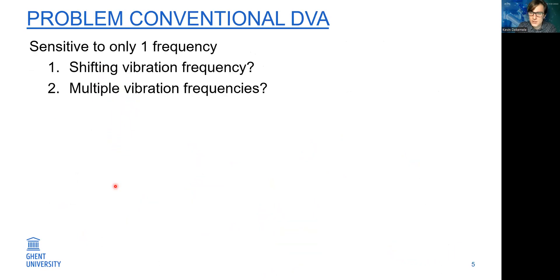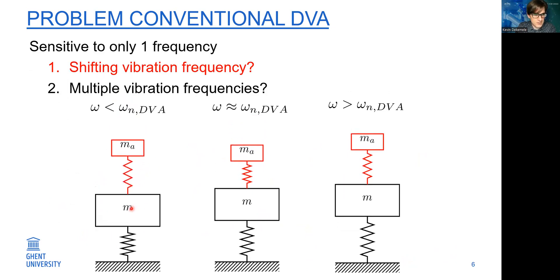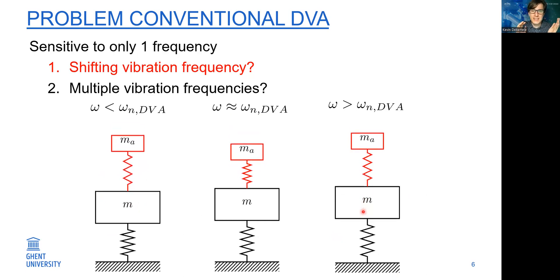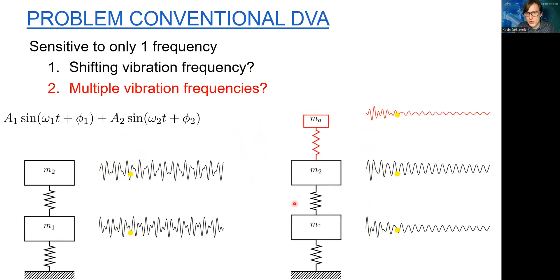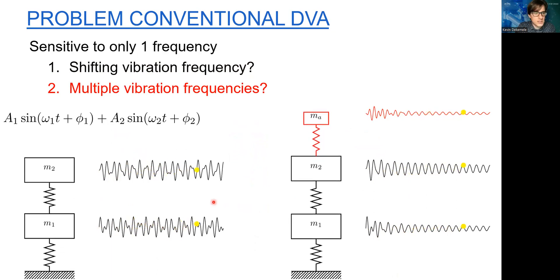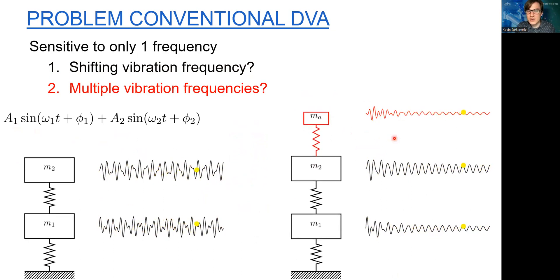Now there is a problem. This conventional DVA is only sensitive to one frequency because it has one natural frequency. What happens if you have a shifting vibration frequency in the host system or if the host system contains several frequencies? If the vibration frequency shifts, the vibration energy in the host system still remains. On the left you see a host system with two degrees of freedom. When impulsively loaded, you have two frequencies, and if we add a conventional DVA, it can only tackle one frequency and the other one remains.